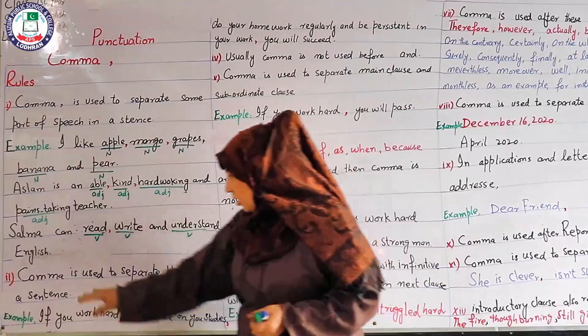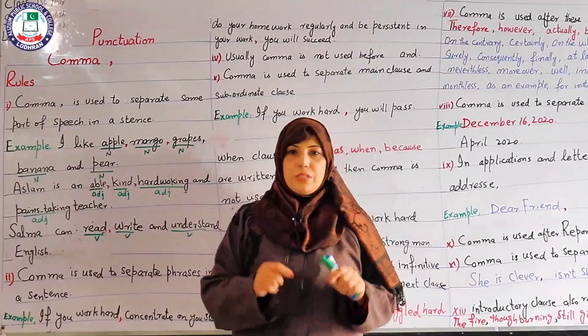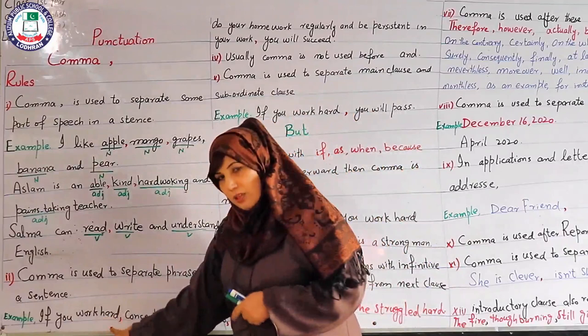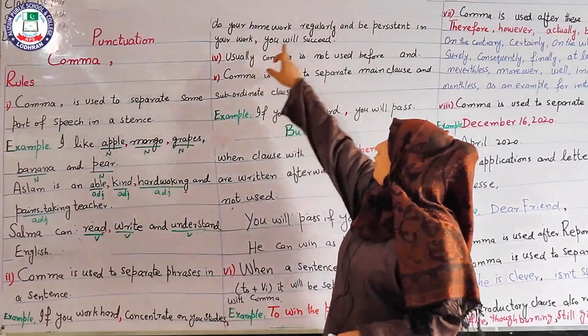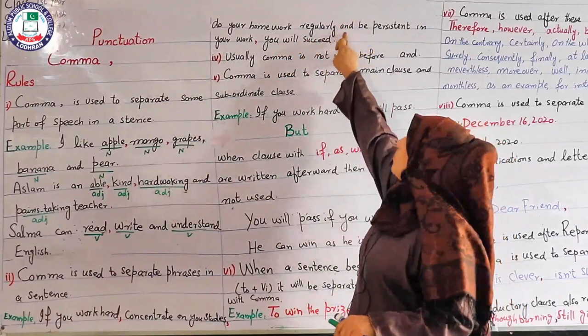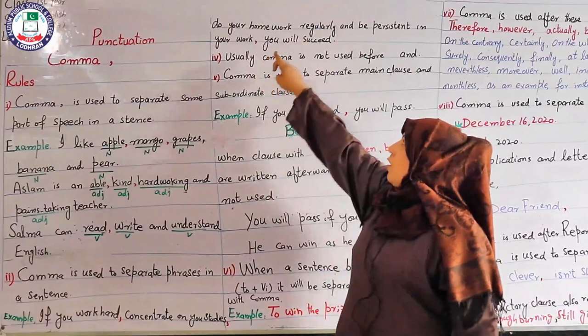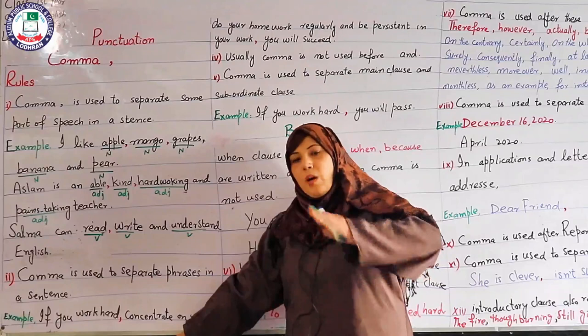Rule number two: comma is used to separate phrases in a sentence. If you work hard, concentrate on your studies, give your best, do your homework regularly and be persistent in your work — you will succeed. When you have two or more phrases in a sentence, you separate them with commas.